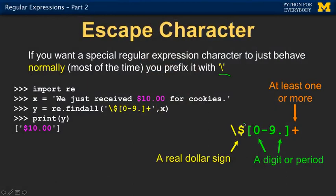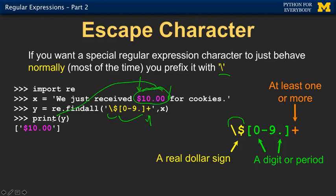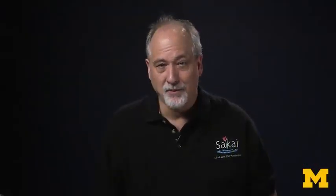We have all these special characters — dollar signs, carets, etc. — and sometimes we actually want to match those characters literally. The backslash can be prefixed to an otherwise active character. Dollar sign has regex meaning, but backslash-dollar-sign means it's really a dollar sign. So if you're looking for strings that start with a dollar sign followed by numbers and dots, backslash-dollar then the digit/dot pattern pulls it out. Use escape characters when you really want a literal bracket, asterisk, plus, or dot.